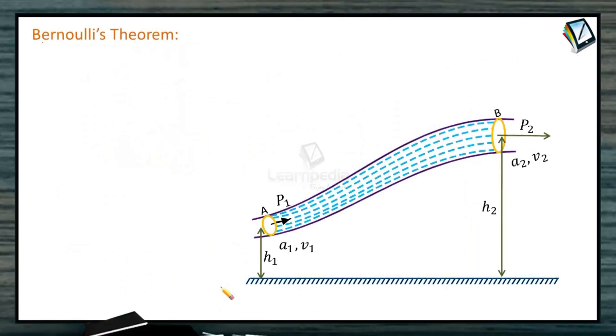Let us study Bernoulli's theorem. Now, I have shown you a streamline here in the figure. Points A and B with respect to the horizontal surface are at heights H1 and H2. Area of cross-section at point A is A1 and at B is A2. Velocity at this point is V1, velocity at this point is V2. The streamline flows like this. Pressure at this point is P1.